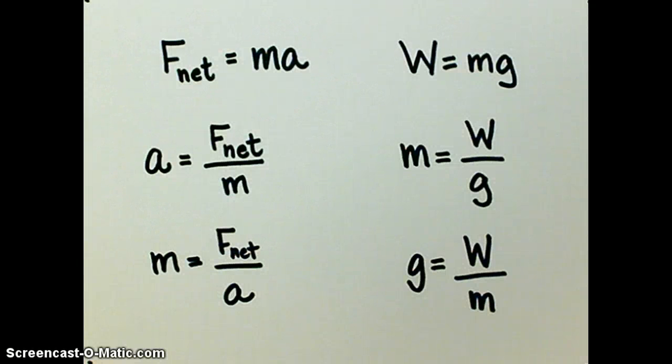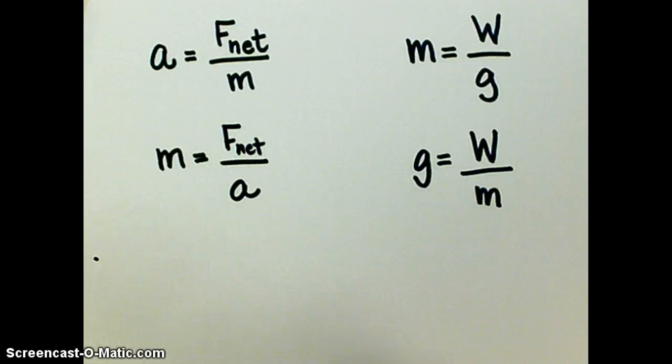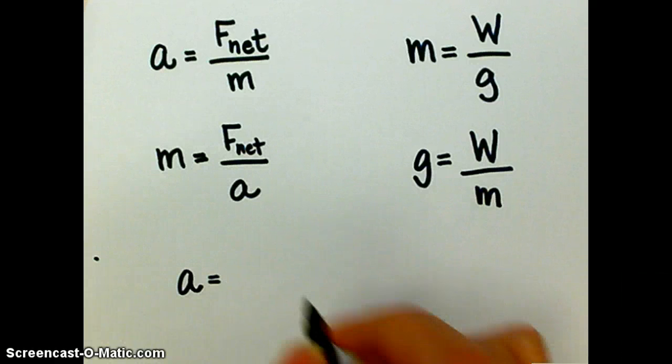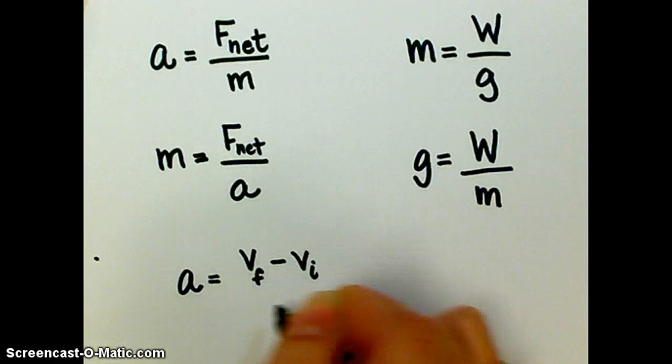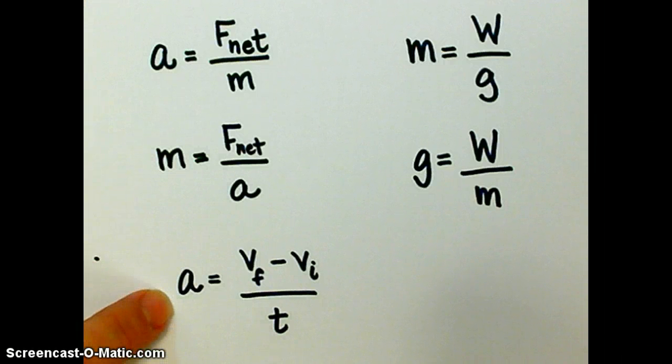The other problem that some of y'all are running into is that you're having to find acceleration the old-fashioned way from when we did our motion problems, and that is final velocity minus initial velocity divided by time. Again, so if you read a problem and you're given, I don't know, a car changes its velocity from this to that in however many seconds, this is the formula that you're probably going to have to use in order to calculate acceleration.